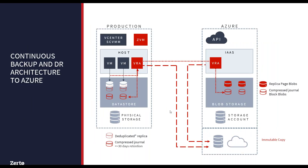Looking at the Azure architecture diagram: on the production site we still have the same ZVM and VRA components, but on the right-hand side we have our Azure environment where the VRA and Zerto Cloud Appliance are combined. We use blob storage to store the data, and Azure immutable storage to keep an immutable copy for scenarios like ransomware attacks. We can also have a third copy coming back to your on-premises environment for smaller incidents where you don't want to fully invoke in Azure — allowing rollback inside the environment using the same Zerto technology.